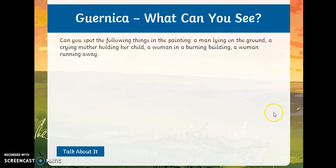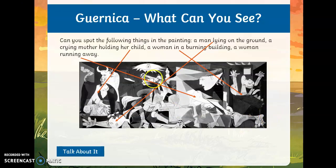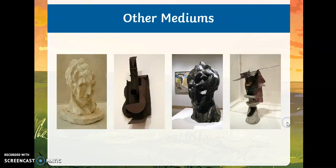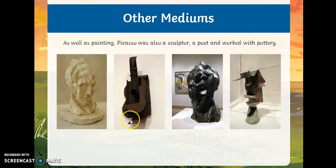Let's see if we spotted them. Here is the man lying on the ground. Here is a mother holding her child. Here is a woman in a burning building. And here is a woman running away. Now, Picasso didn't just work in paint — he also worked in other media. He was a sculptor, a poet, and he also worked in pottery. And you can imagine that cubism works very well in three dimensions, because you can actually pull different sides of things apart and really show how you can look at things from lots and lots of different angles.